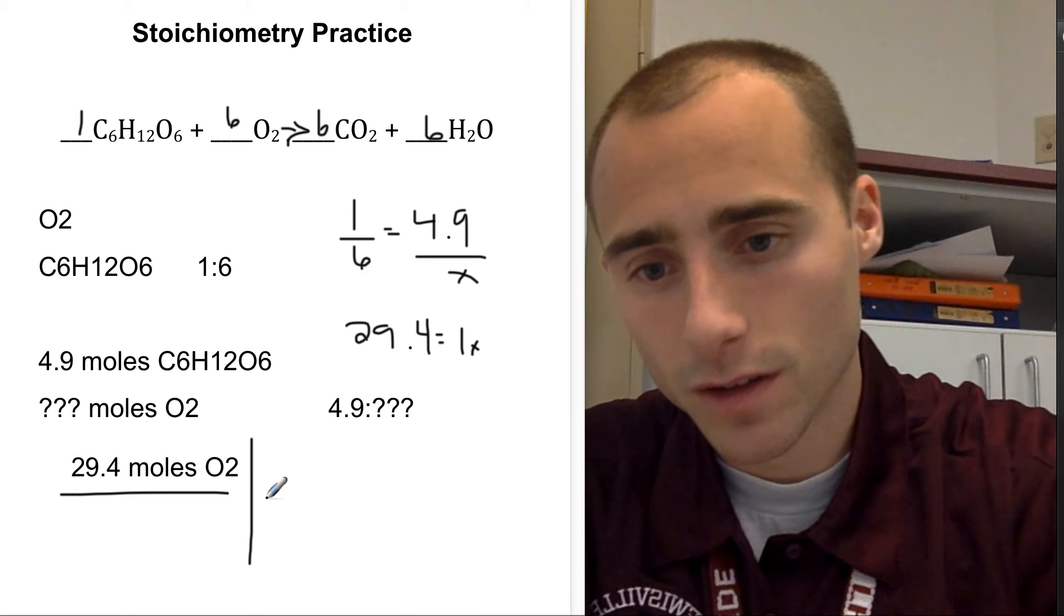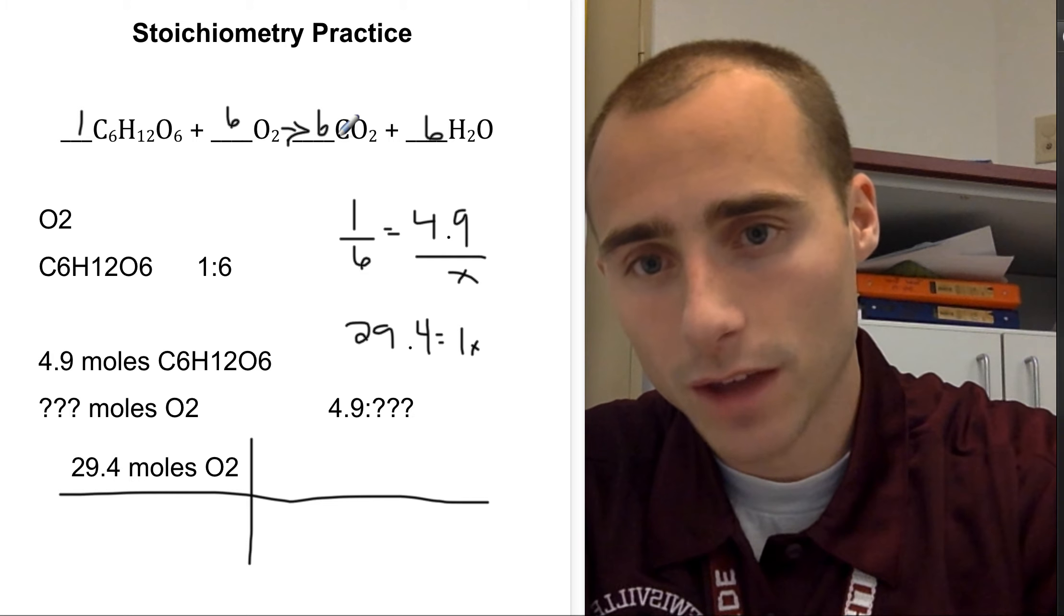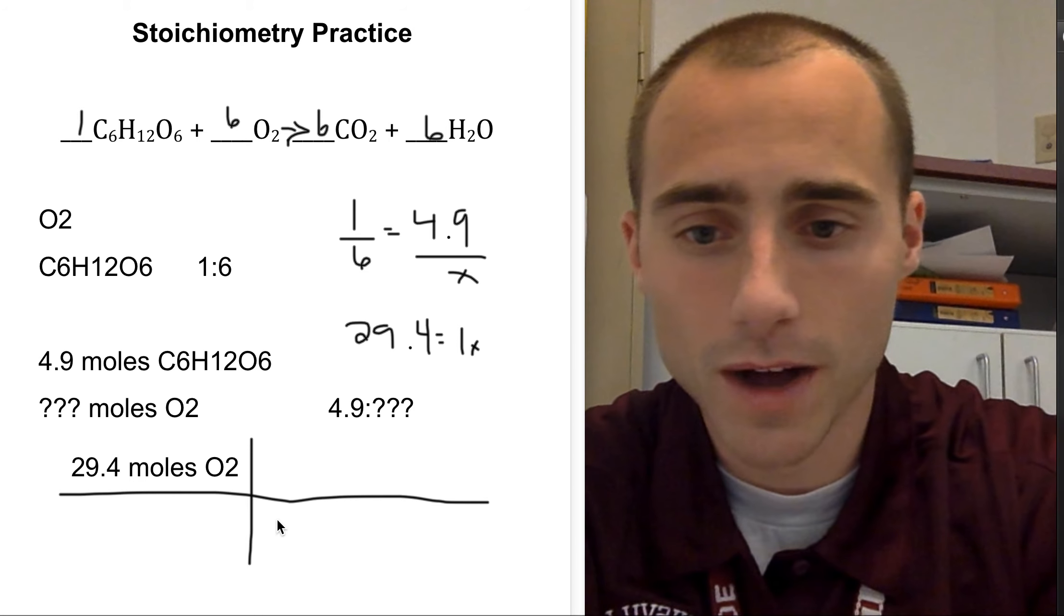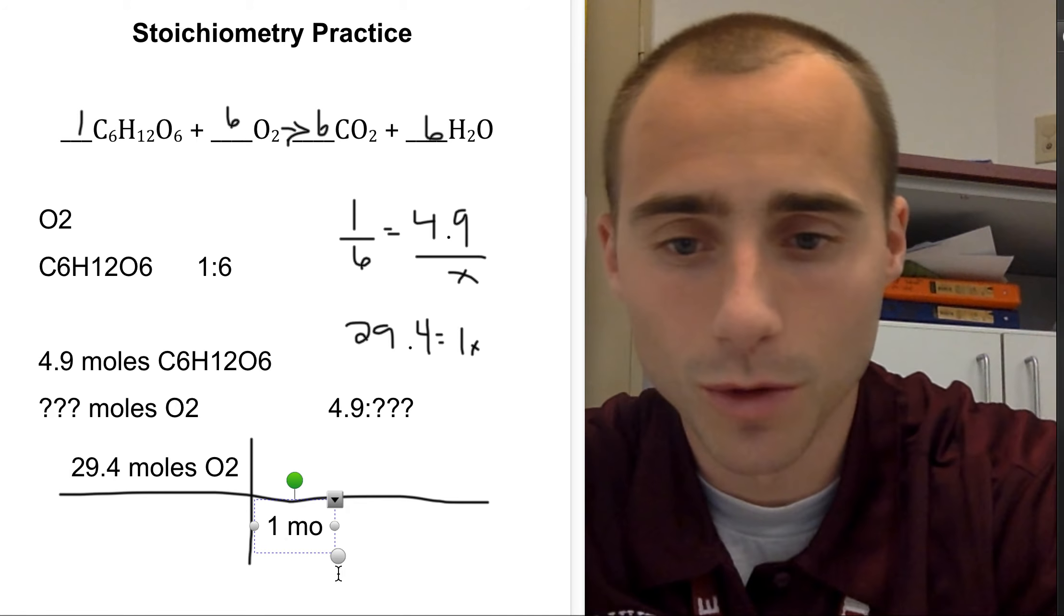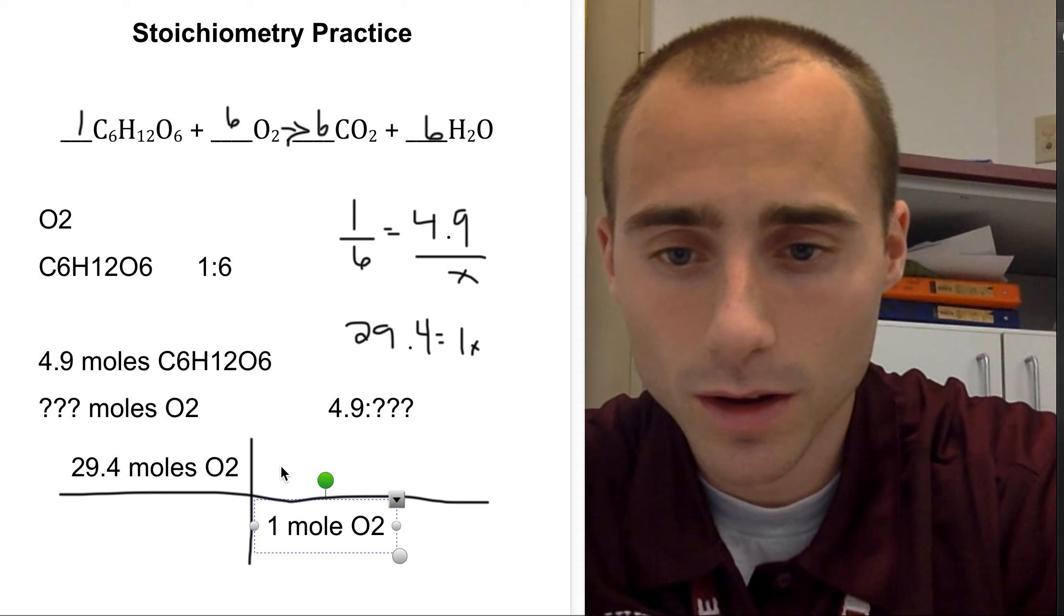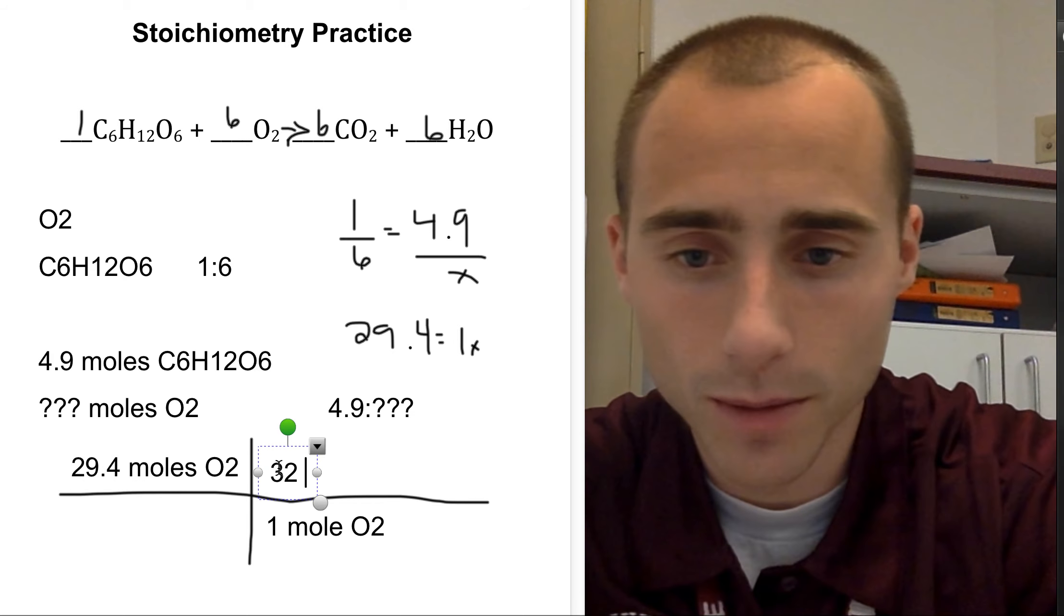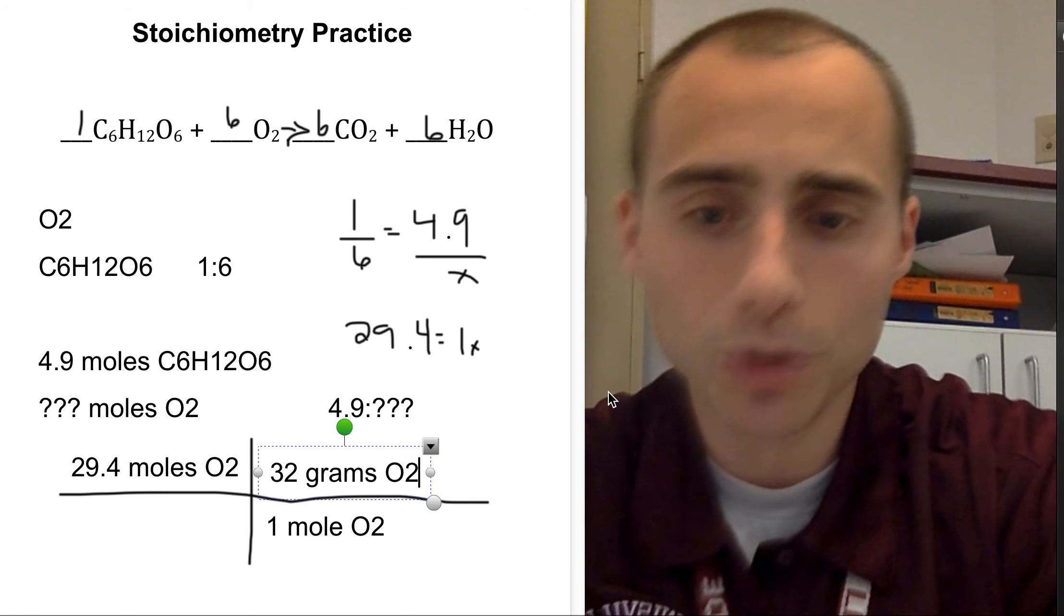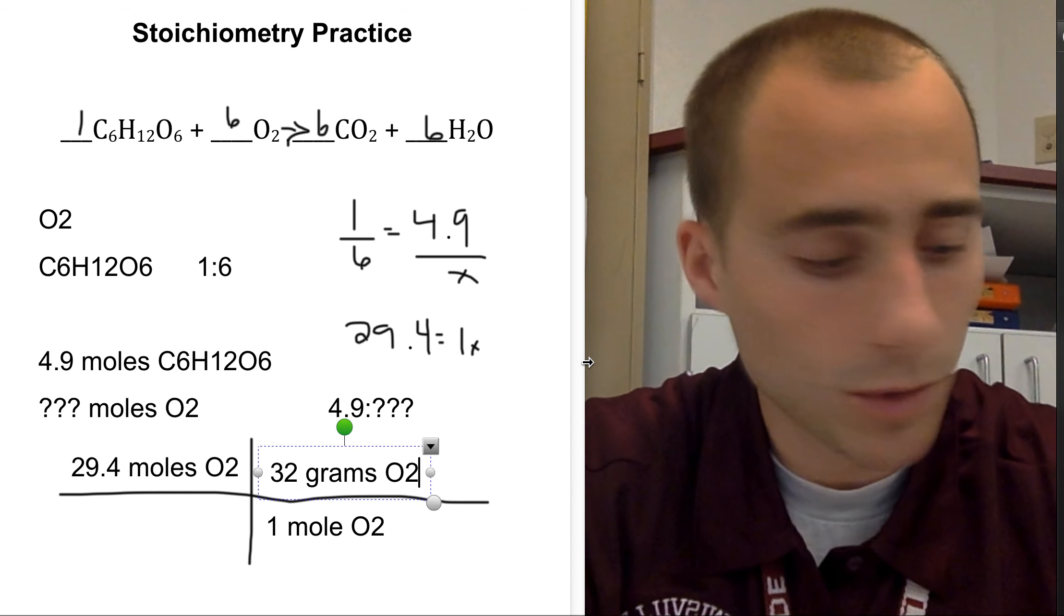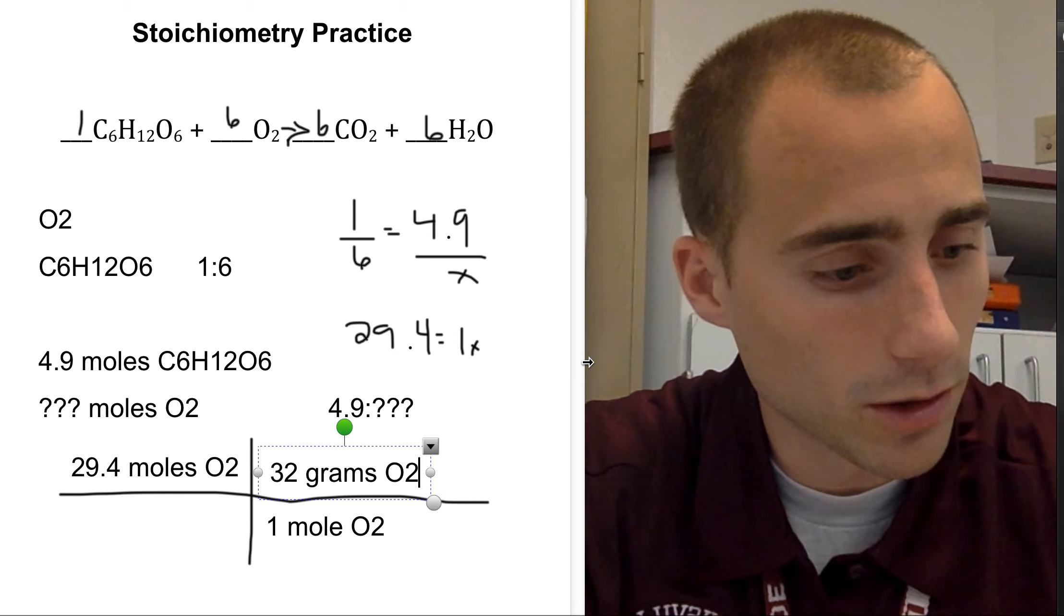You're going to set up your picket fence and use a one-step problem to convert these moles of oxygen into grams of oxygen. So you do 1 mole of O2 is 32 grams of O2. Multiply straight across.